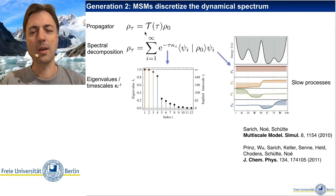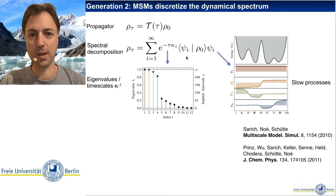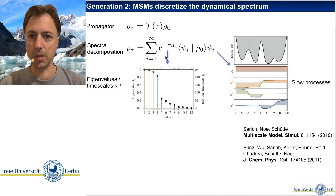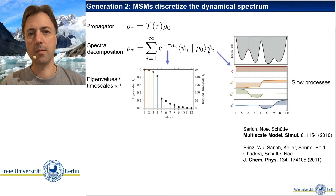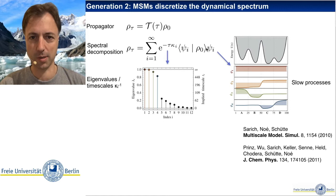Under very mild conditions, this operator can be decomposed into eigenvalues and eigenfunctions which describe the dynamical change to the probability distribution. This expansion has eigenvalues written in a form that captures the slow transitions of the system, which is what we are most interested in. We also have amplitudes that depend on the starting distribution and the eigenfunctions, and eigenfunctions that describe the mechanisms at certain timescales.